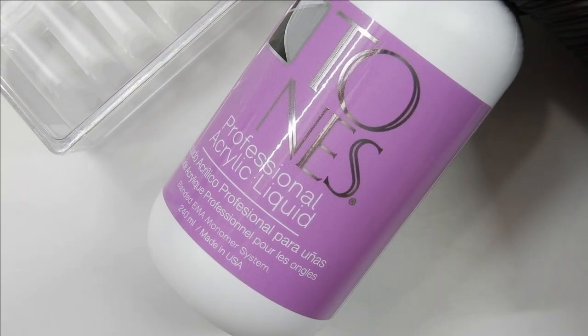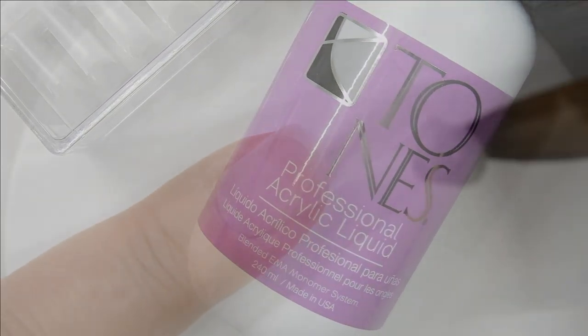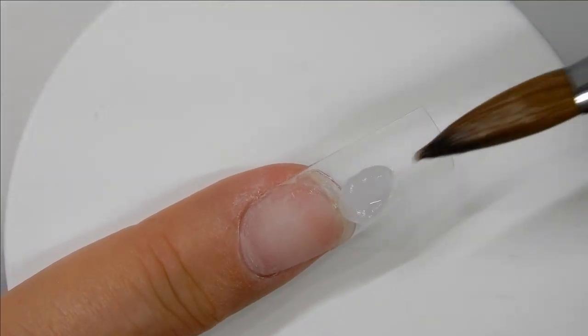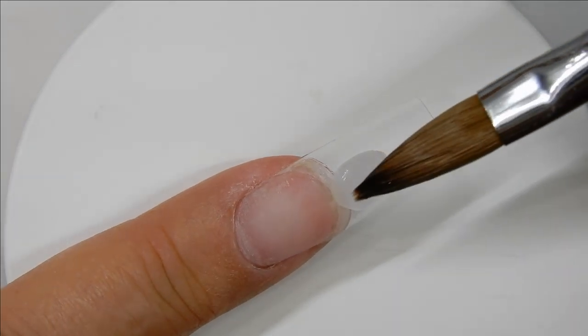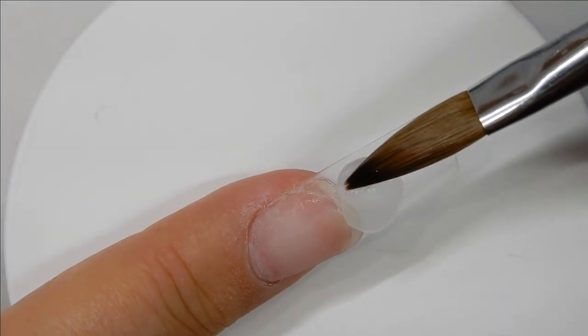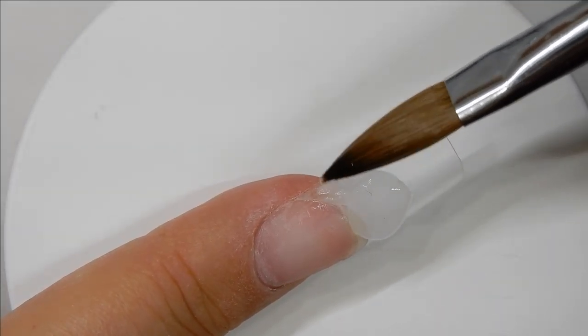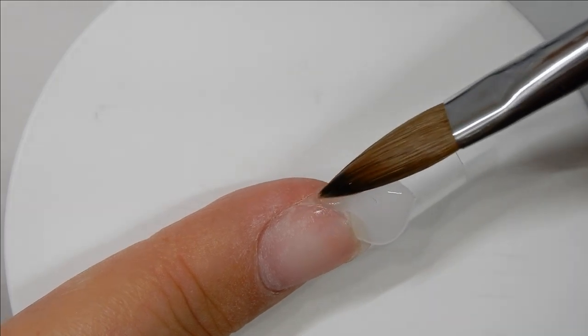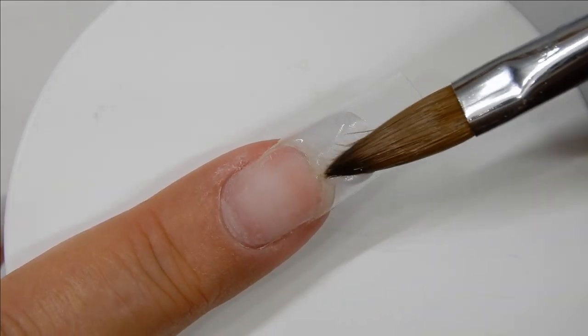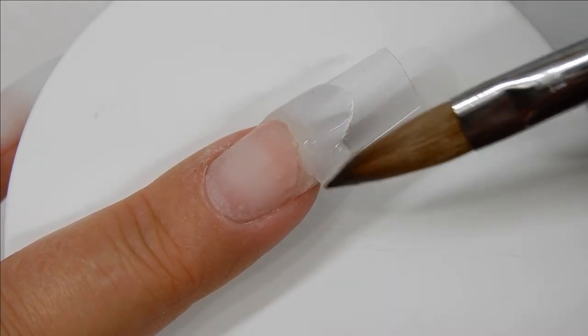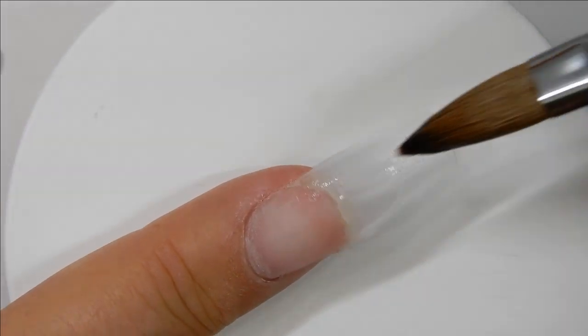I'm only going to apply the acrylic to where the tip is glued onto the nail at the free edge and then on the tip itself, because that's the only part that I'm going to pinch is the tip area, so I don't need it anywhere else right now.